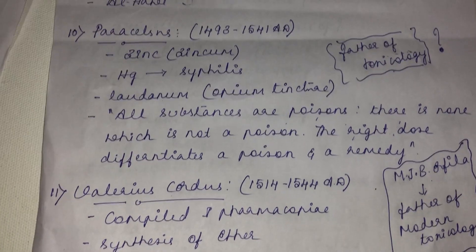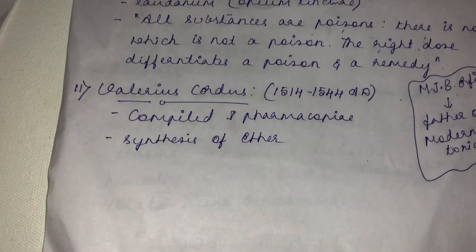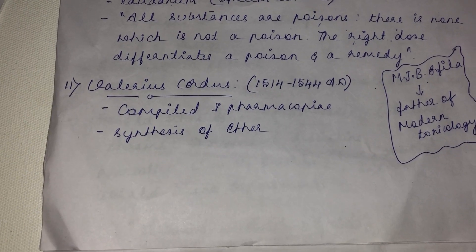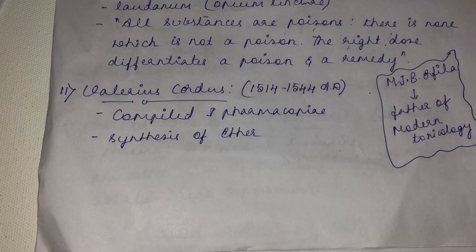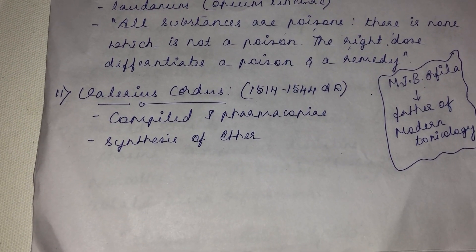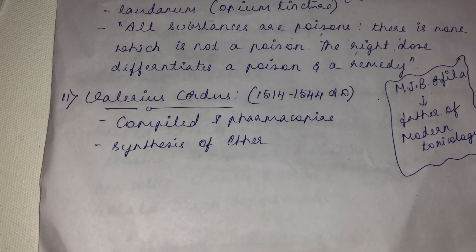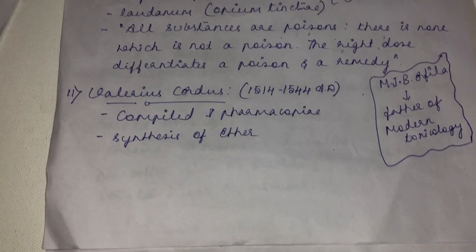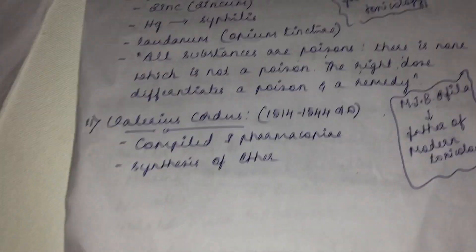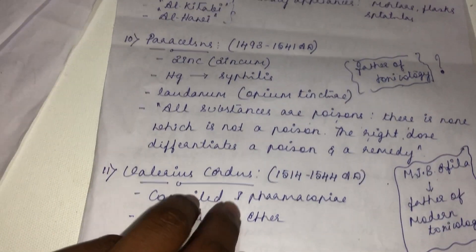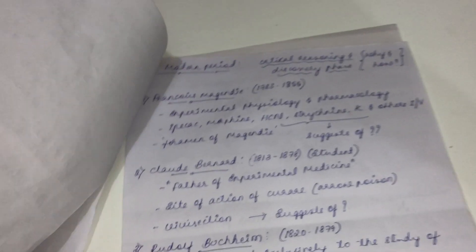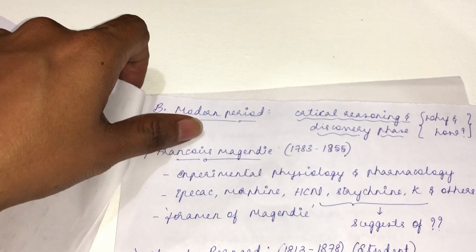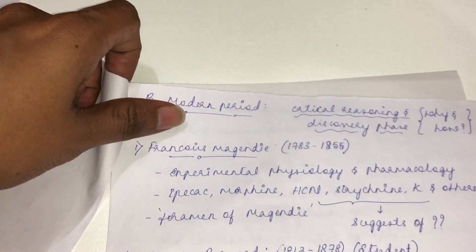Valerius Cordus, during 1514 to 1544 AD, was the first person who compiled the first pharmacopoeia and performed the synthesis of ether. This ends the ancient phase in the development of pharmacology.